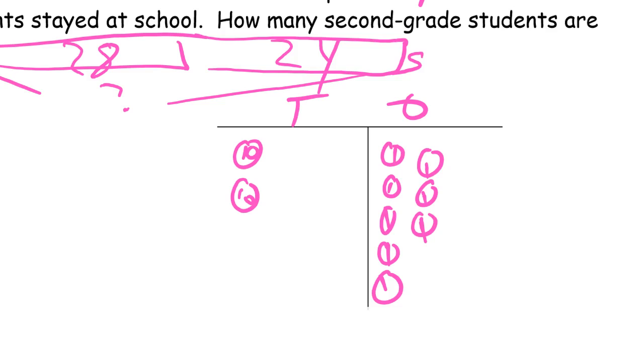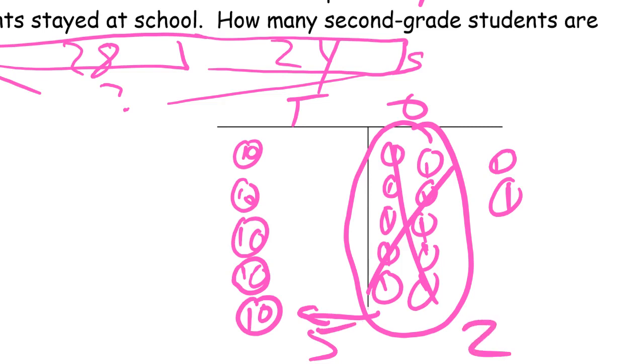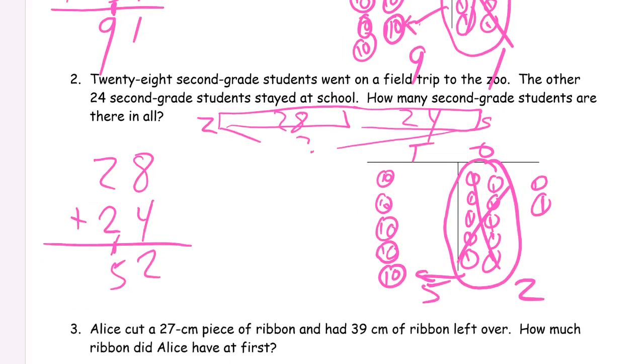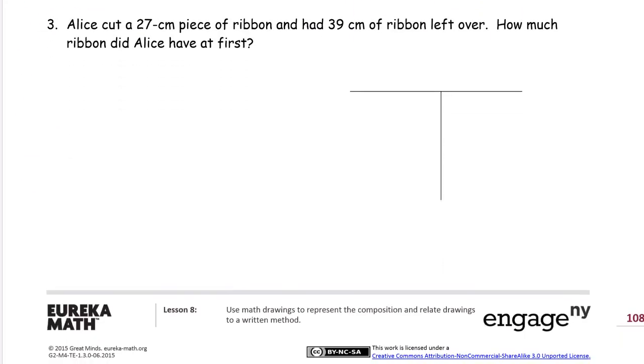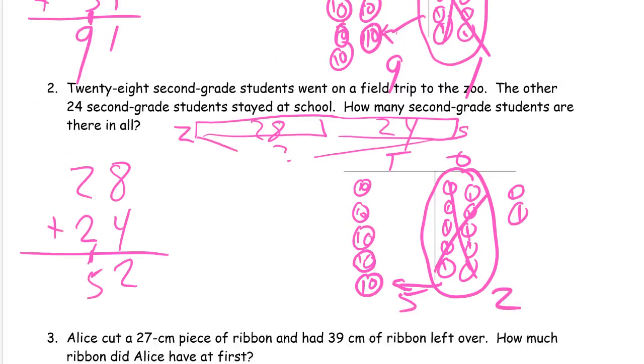And then the 24 is 2 more 10s and 4 more 1s: 1, 2, 3, 4. That's a 10, we can bundle those. We're not going to count them twice, so we'll cross those out and there's the 10 that we replace them with. How many 10s do we have? 1, 2, 3, 4, 5 10s, 2 1s. That makes 52, and that's the vertical matches our vertical answer, vertical sum.